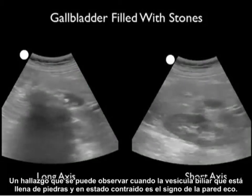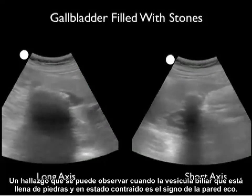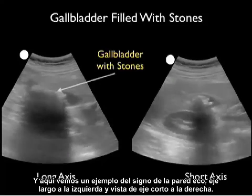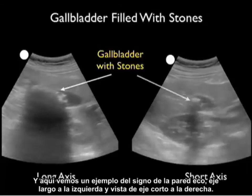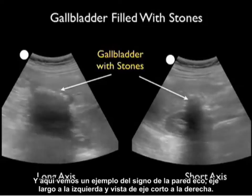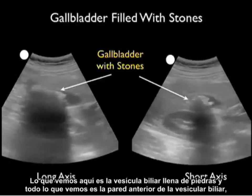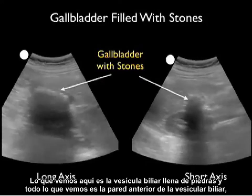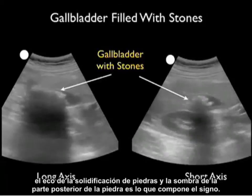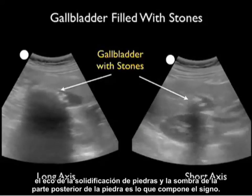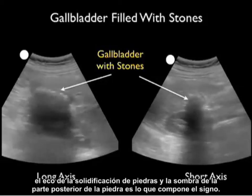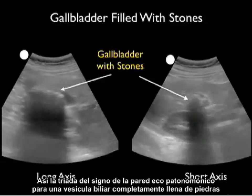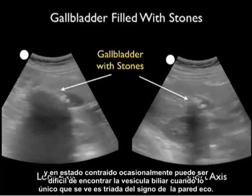A sonographic finding seen when a gallbladder is completely filled with stones in a contracted state is the wall echo sign. We see an example here in long axis on the left and short axis on the right. What we see is the anterior wall of the gallbladder, the echo from the concretion of stones, and the shadow off the back of the stones making the sign. The wall echo sign is pathognomonic for a gallbladder completely packed with stones in a contracted state, and it can occasionally be difficult to find the gallbladder when all you see is this sign.